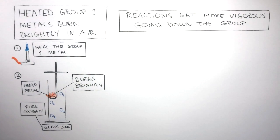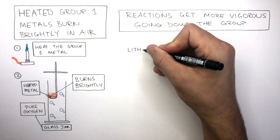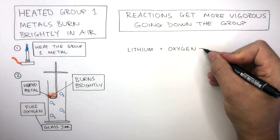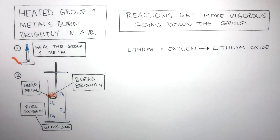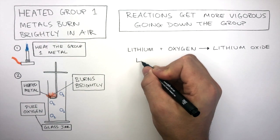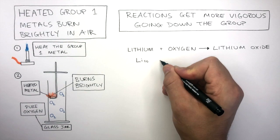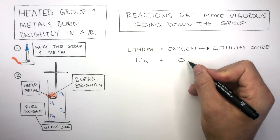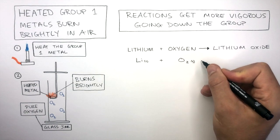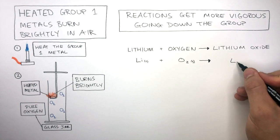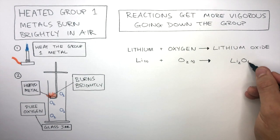Let's now go through the word and symbol equations for when group 1 metals are heated and react in pure oxygen. Lithium reacts with oxygen to form lithium oxide solid. The balanced symbol equation is Li (s) for solid, plus O2 (g) for gas, reacts to form Li2O (s) for solid.